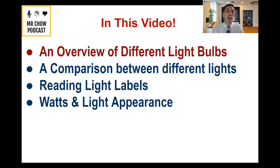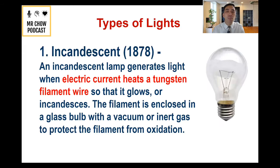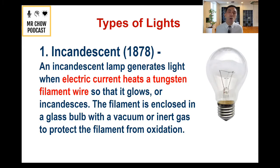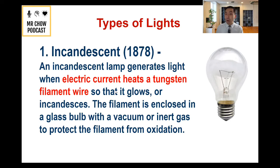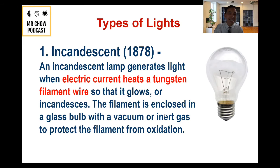In this video, we're going to talk about a few things. Let's first talk about an overview of different light bulbs — really interesting here, and look at the dates as well. When you look at an incandescent light bulb, this is really the original light bulb. 1878, over a hundred years ago, an incandescent lamp generates light when electric current heats a tungsten filament so that it glows. The filament is enclosed in a glass bulb with a vacuum or a gas to protect it from oxidation.